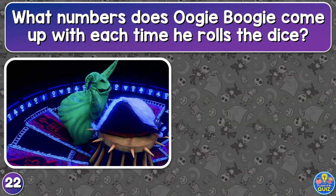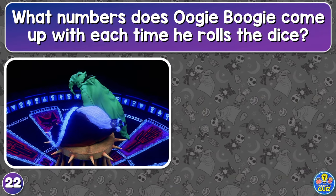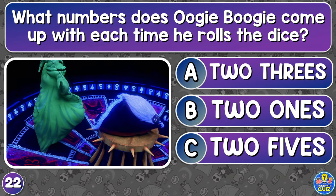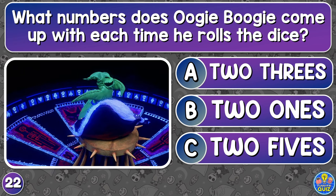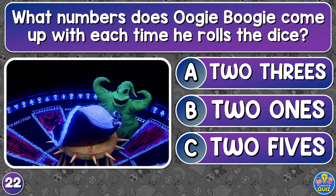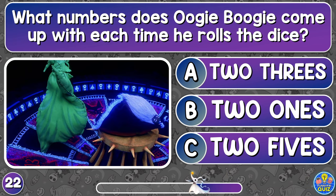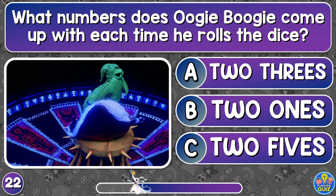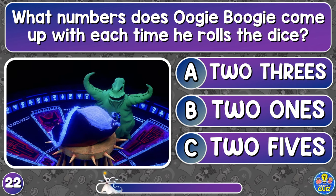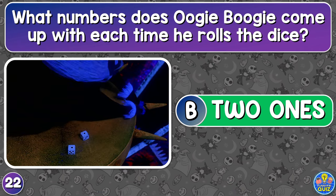What numbers does Oogie Boogie come up with each time he rolls the dice? Two threes, two ones, or two fives? Two ones.